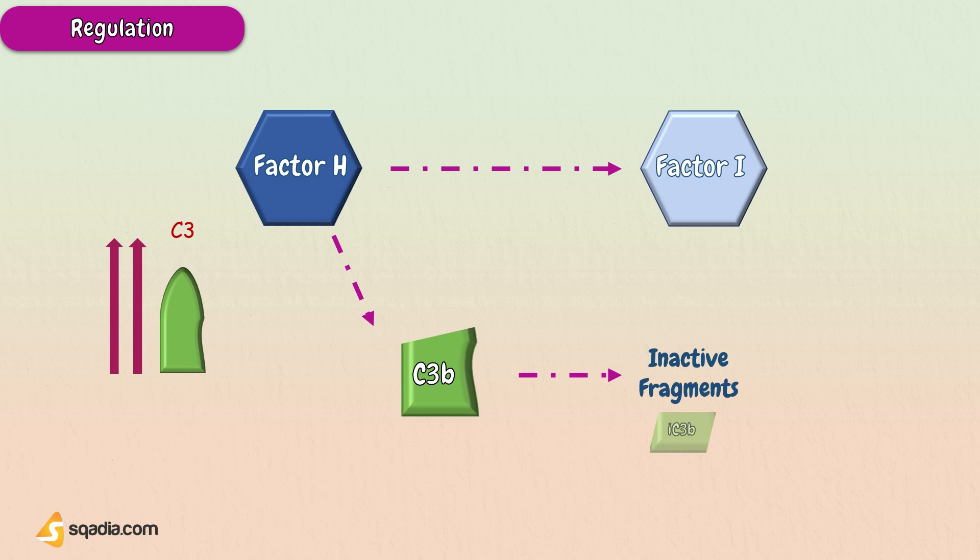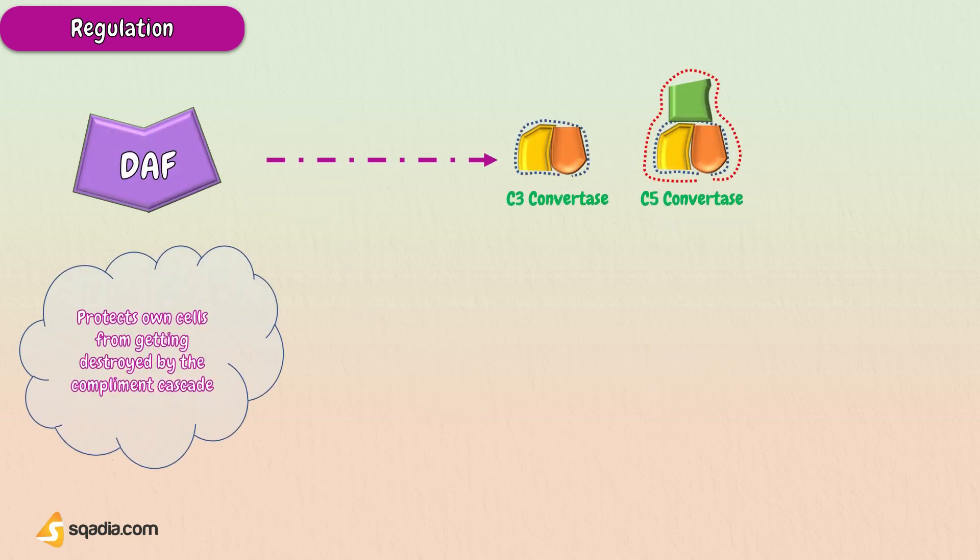The decay accelerating factor is an inhibitor that protects your own cells from getting destroyed by the complement. This is done by inhibiting the formation of C3 and C5 convertase. DAF inhibits the binding of C2 to C4B and promotes the dissociation of existing C4B2A complexes. Complement receptor CR1 has similar effects as DAF.